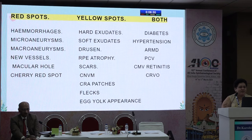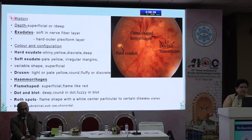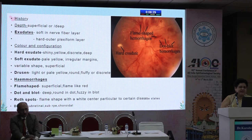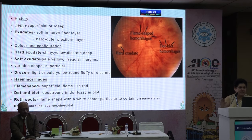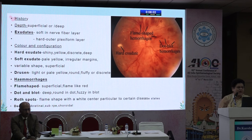When you get red or yellow spots, especially for postgraduates learning to see these lesions, you must identify them systematically: take a careful history — the history gives you half the diagnosis. Common recurring conditions like diabetes and hypertension should be first in mind. Then assess depth: soft exudates are superficial in the nerve fiber layer, hard exudates are deeper in the outer plexiform layer. For color and configuration: shiny, yellow, discrete hard exudates; pale yellow, irregular margin soft exudates; light yellow, round fluffy or discrete drusen.